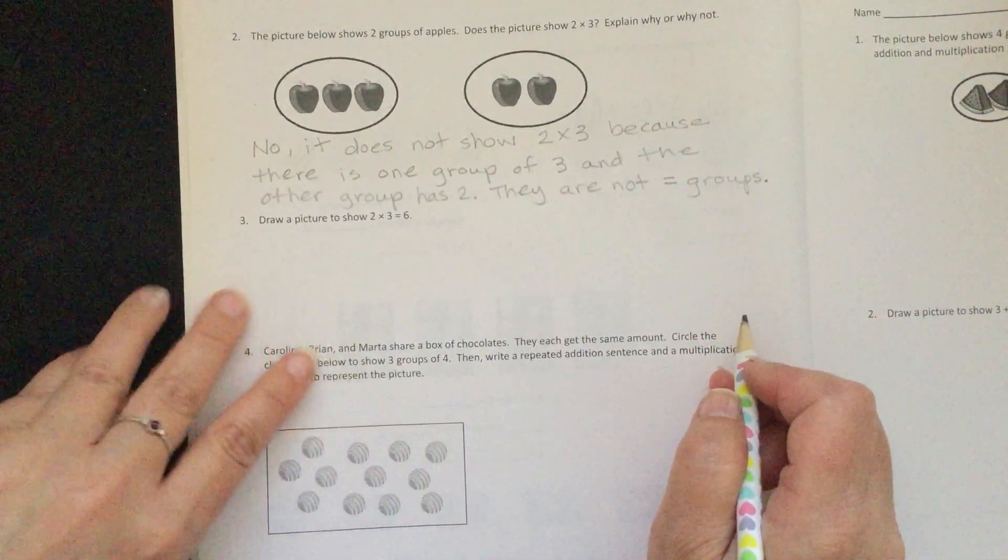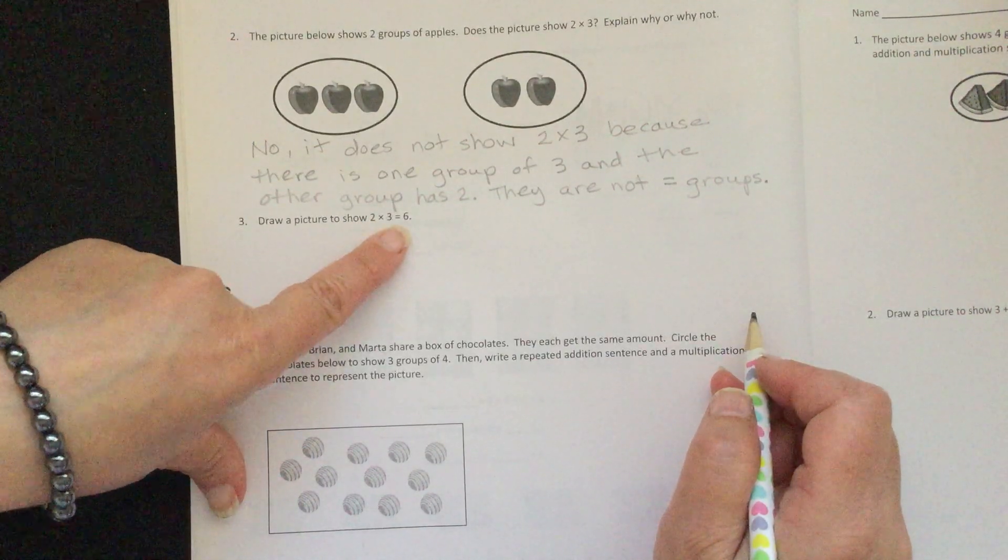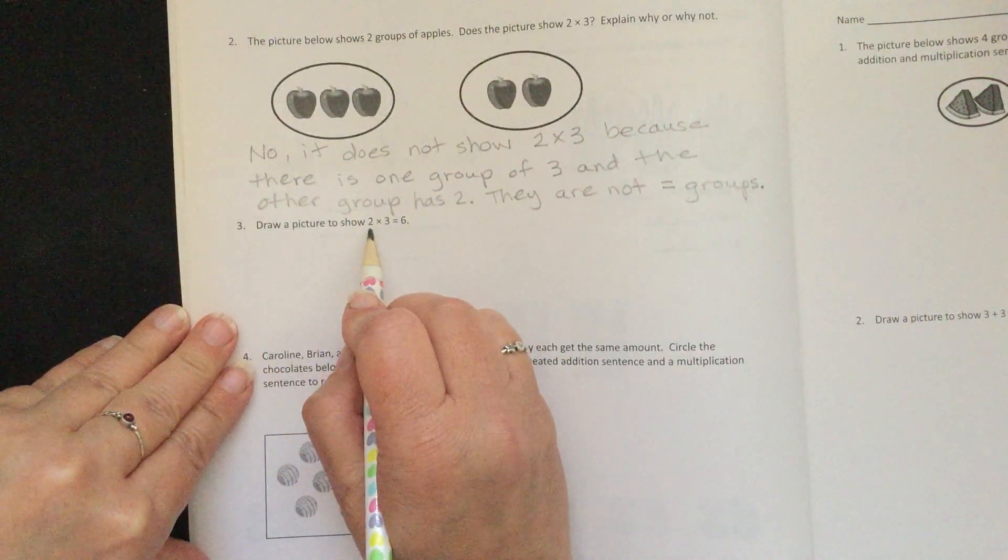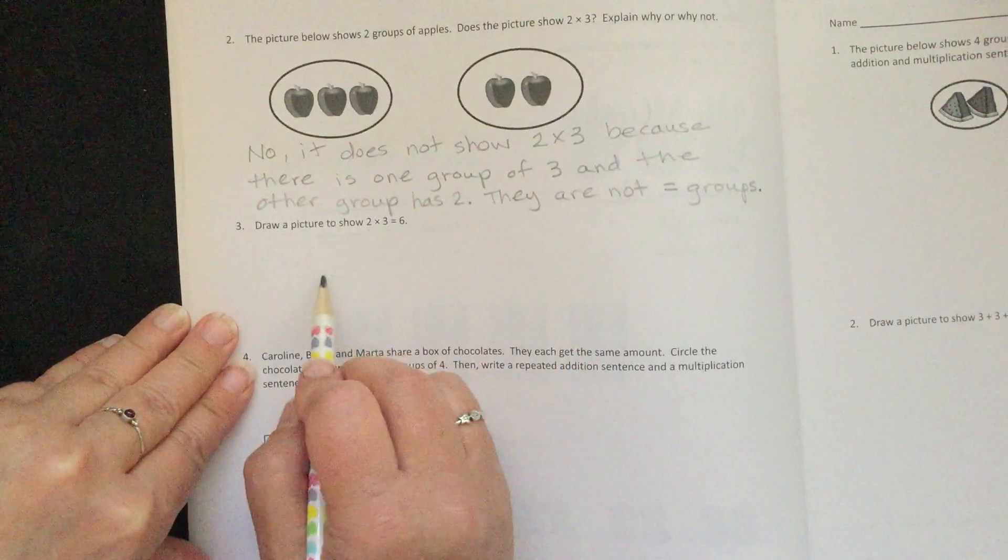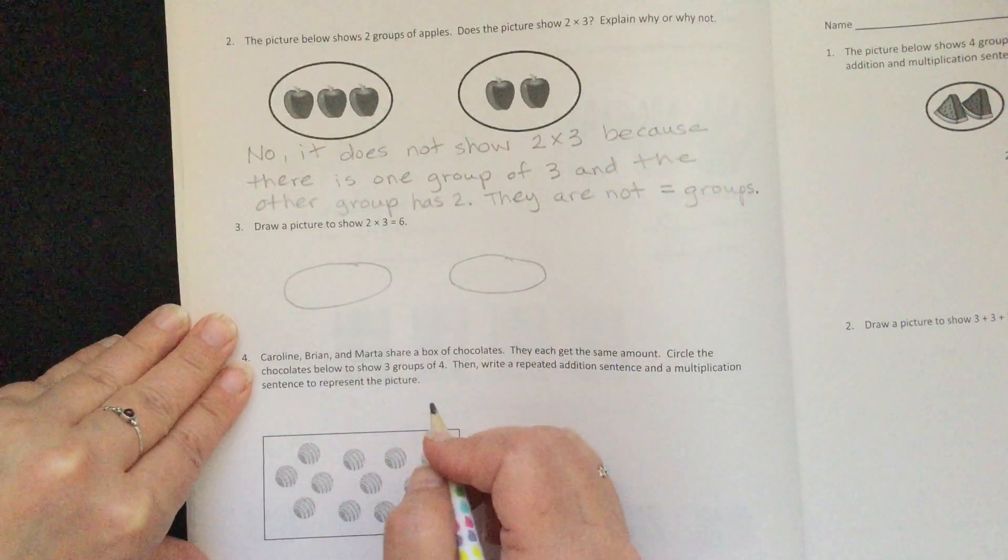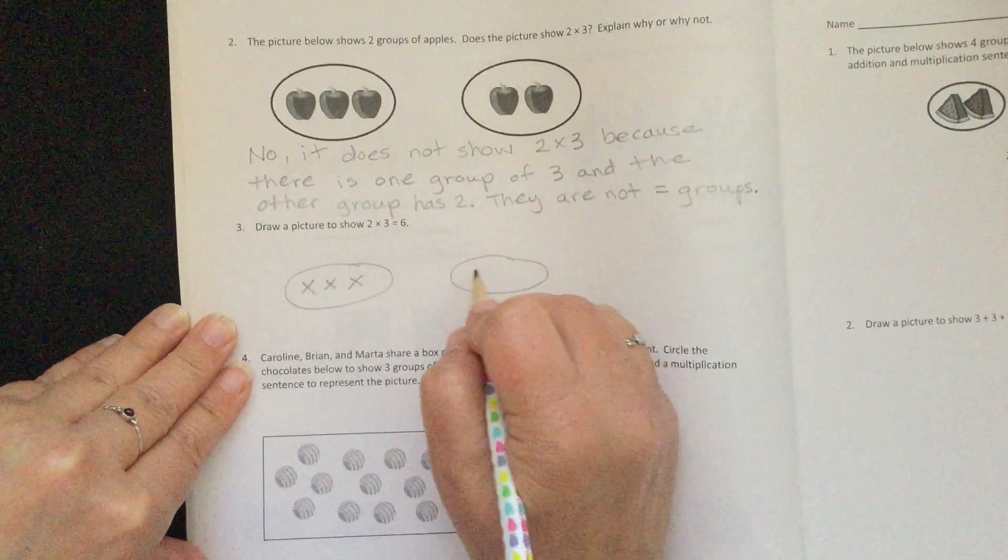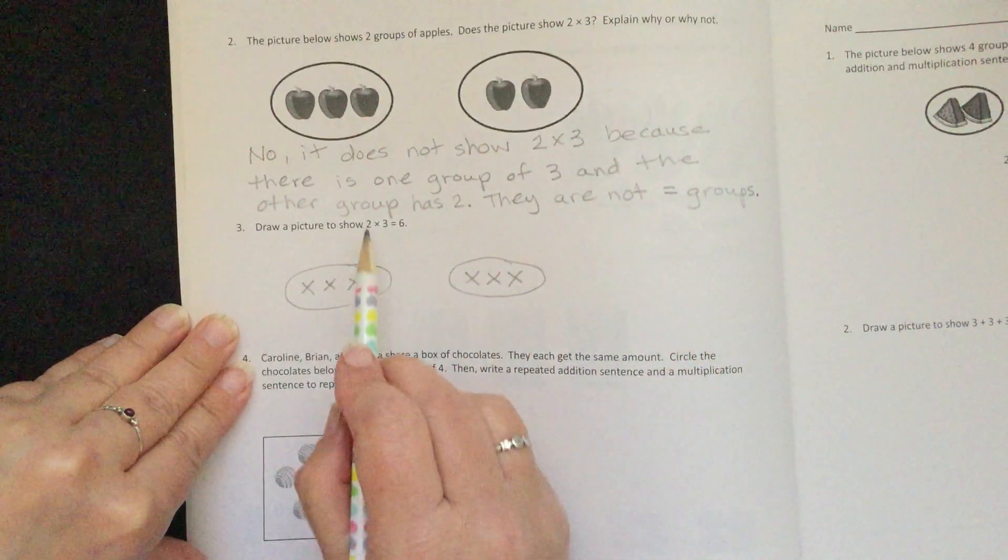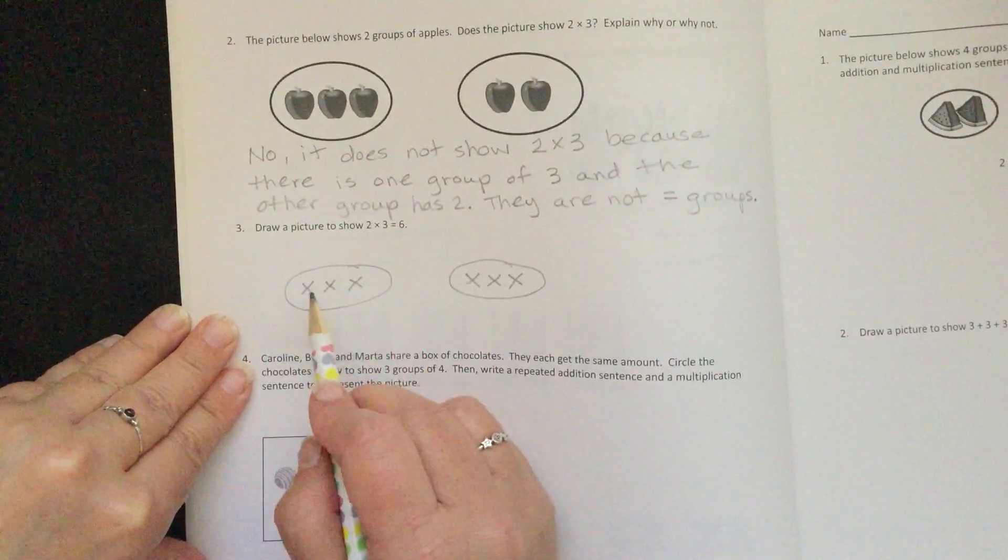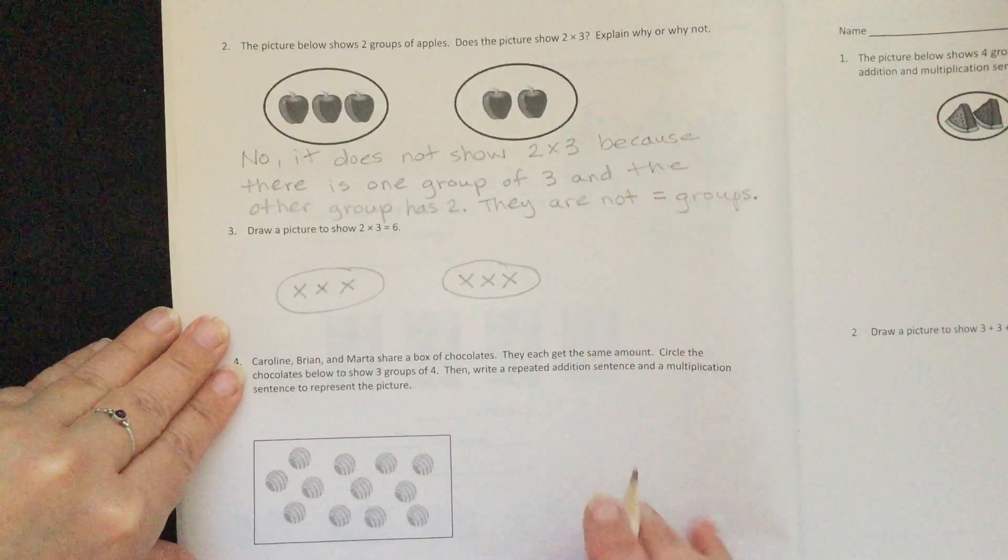It says draw a picture to show 2 times 3 equals 6. In Eureka Math, the first number in your multiplication equation is going to be your number of groups. So we need to have 2 groups, and I want 3 in each group. I'm just going to make X's: 1, 2, 3, and 1, 2, 3. So we have 2 groups with 3 in each group, so that will equal 6. We could even count it: 1, 2, 3, 4, 5, 6. There is our picture to show 2 times 3 equals 6.